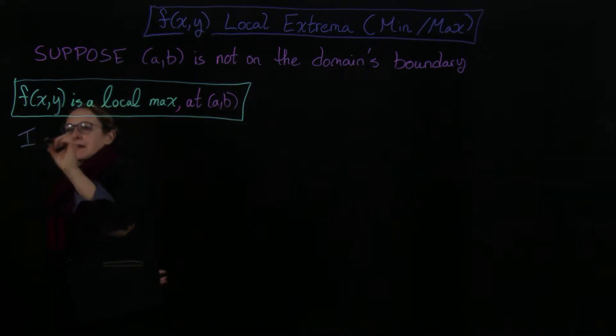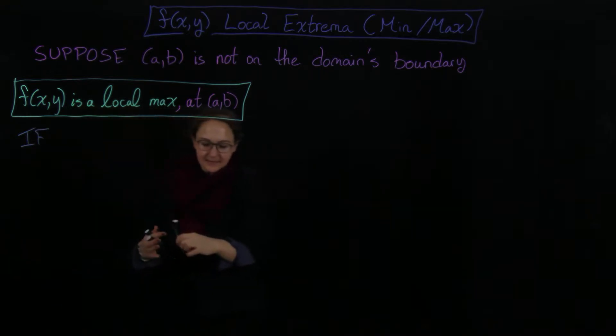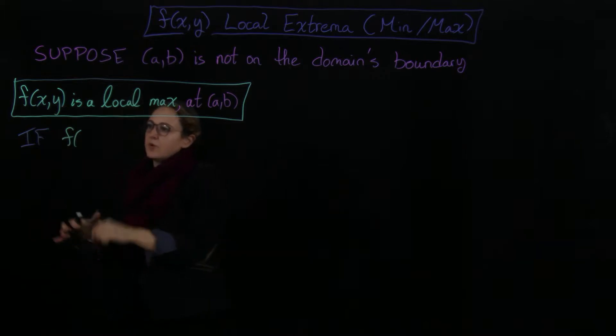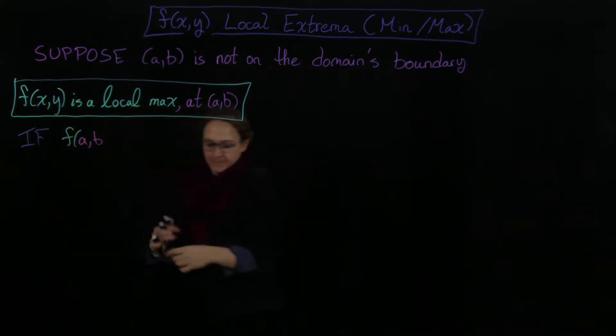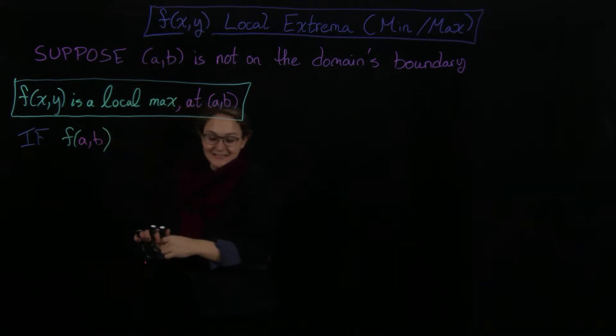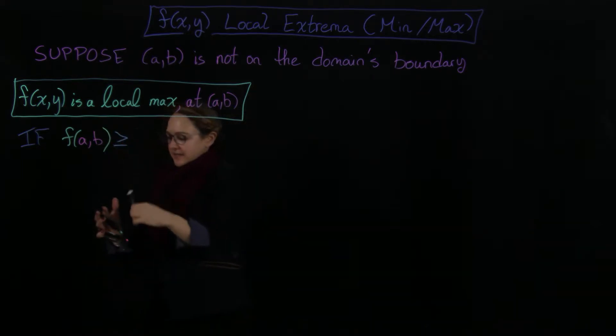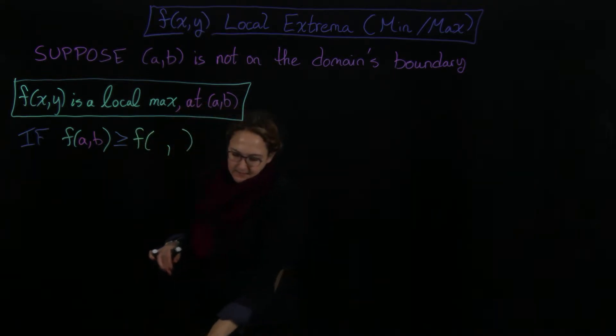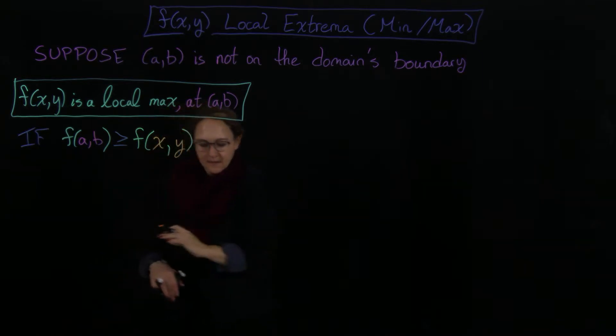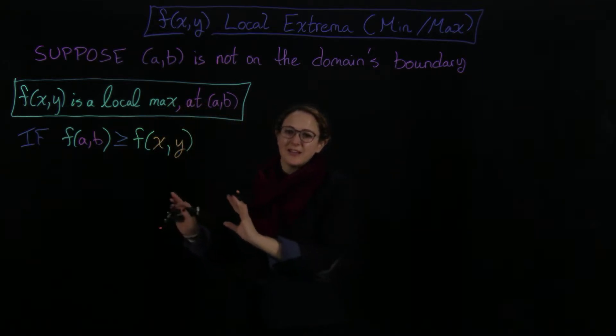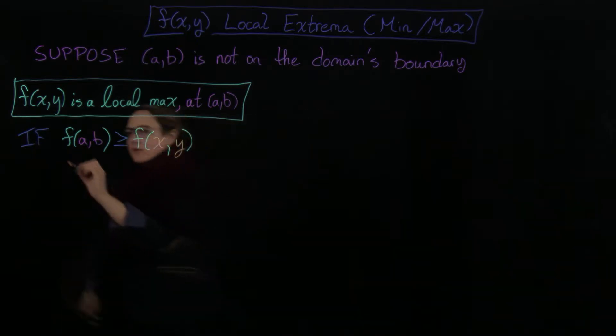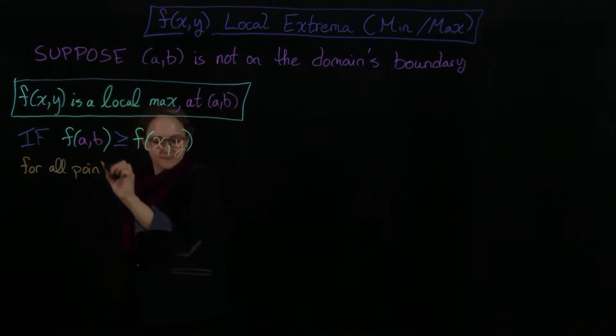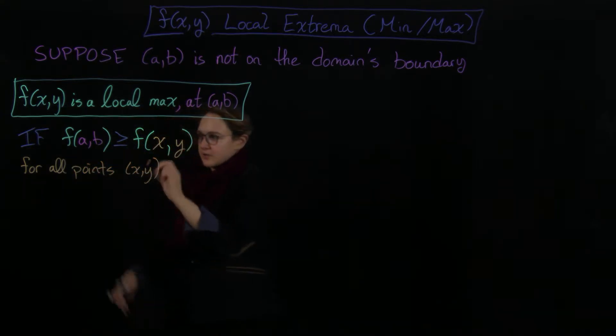So when does this happen? This happens if we have that f(a,b), so when I plug this point (a,b) into my function, I'm going to get out a value that's at least as big as what I'd get for any other function. This is the biggest value I could possibly get. So this is for all points (x,y), but we're only looking at nearby. So for all points (x,y) that are near my original point (a,b).